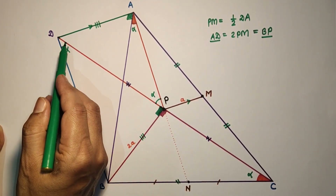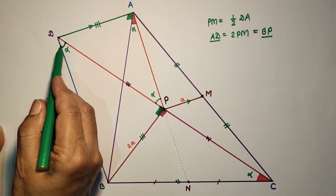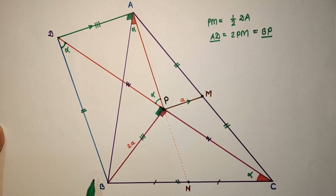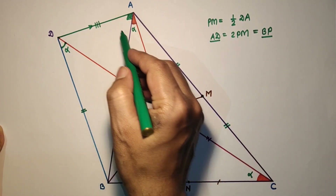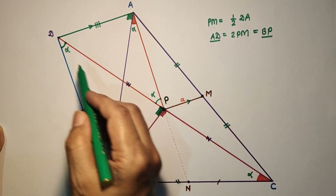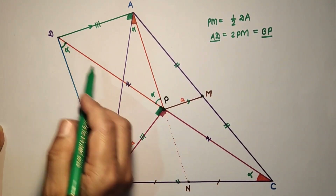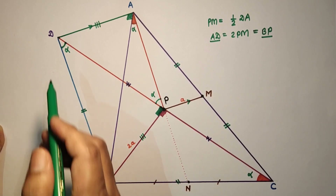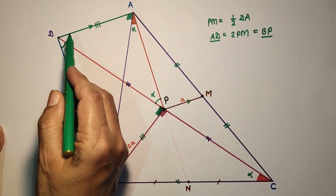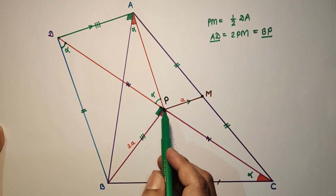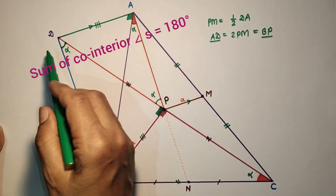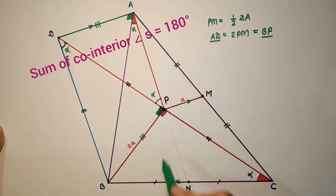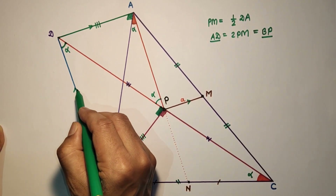Since BP subtends alpha and DA also subtends alpha, the alternate angles are equal. Therefore BD is parallel to AP. Also, angle BPA is 90 plus alpha and angle BDA is 90 minus alpha; since opposite angles of a cyclic quadrilateral are supplementary, their sum is 180 degrees, confirming that BD is parallel to AP.